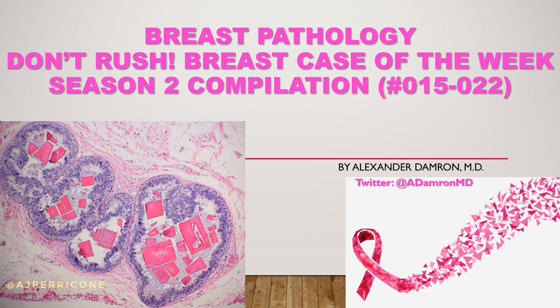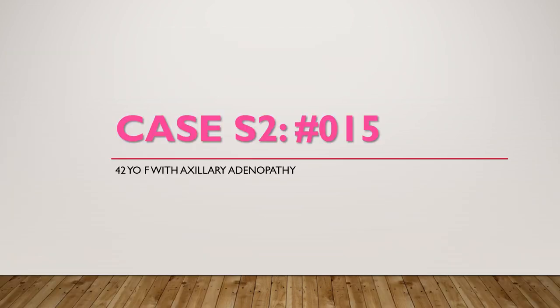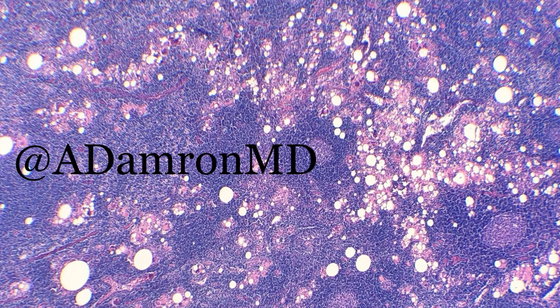This is the 15th case overall, kicking off season two. I presented this case as a 42-year-old female with axillary adenopathy. This is the first picture I showed. On low power, we're biopsying a lymph node in this case. On low power, you can appreciate that there seems to be a lot of vacuolation in the lymph node architecture that you're not really typically used to seeing. And you can see some maybe reactive follicles.